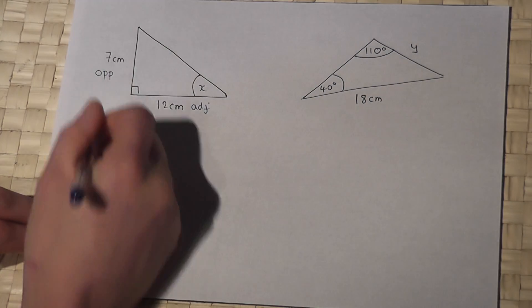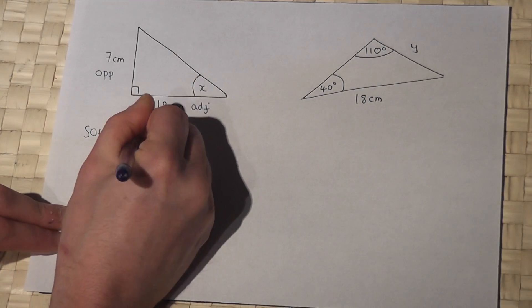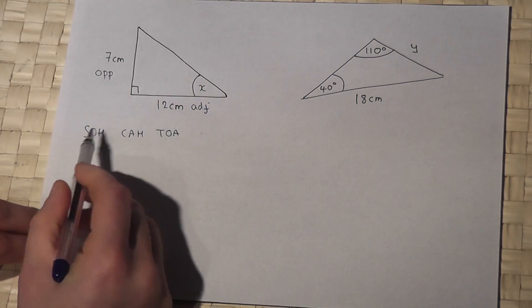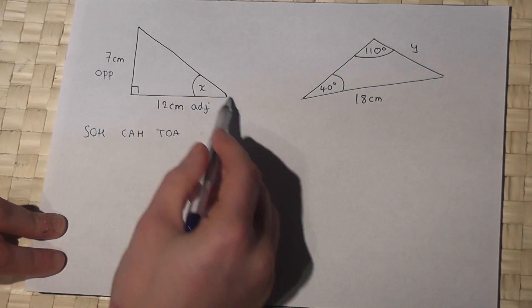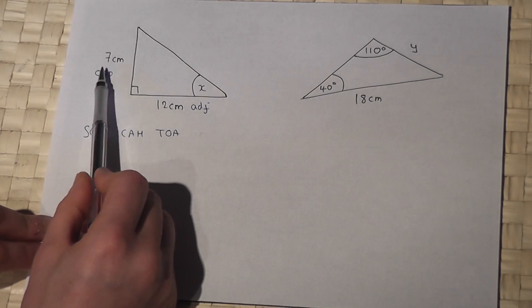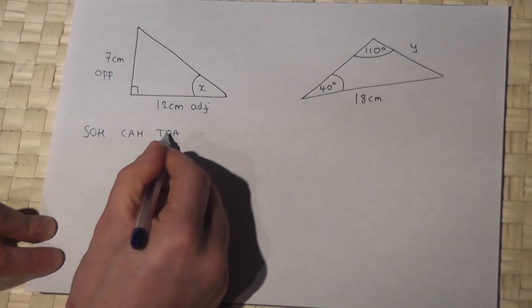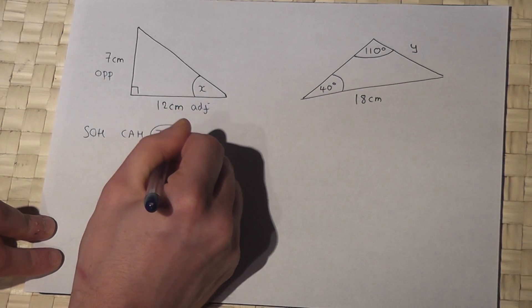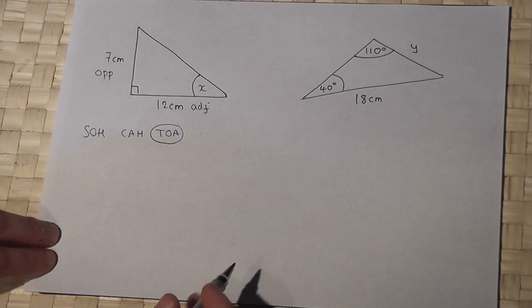Now then, SOH CAH TOA is a way to remember equations to use with right-angled triangles when you've got two sides and an angle. Now I know the opposite and the adjacent, so therefore O and A, I'm going to use the TOA part. And TOA stands for the following.